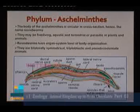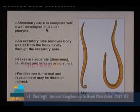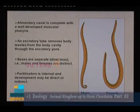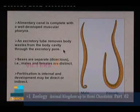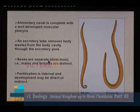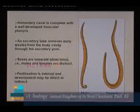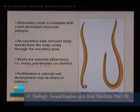The alimentary canal is also provided with a muscular pharynx, which is helpful in the feeding process. They also have an excretory tube which removes waste material from their body cavity through an excretory pore. They have a dioecious character — sexes are separate. Male sex organs are in the male individual and female sex organs in the female individual.